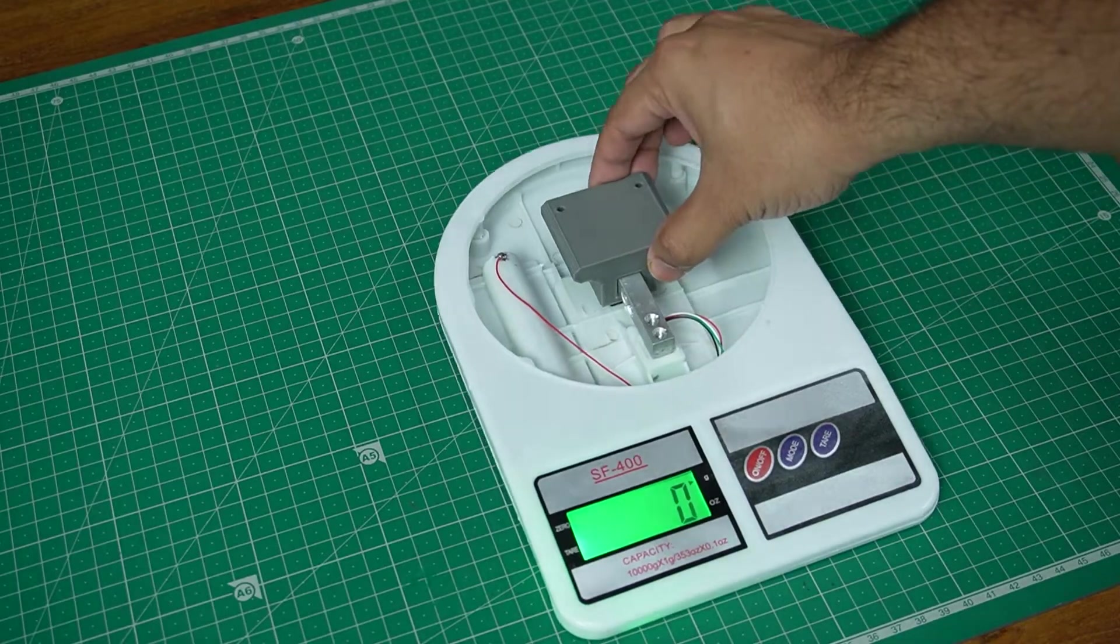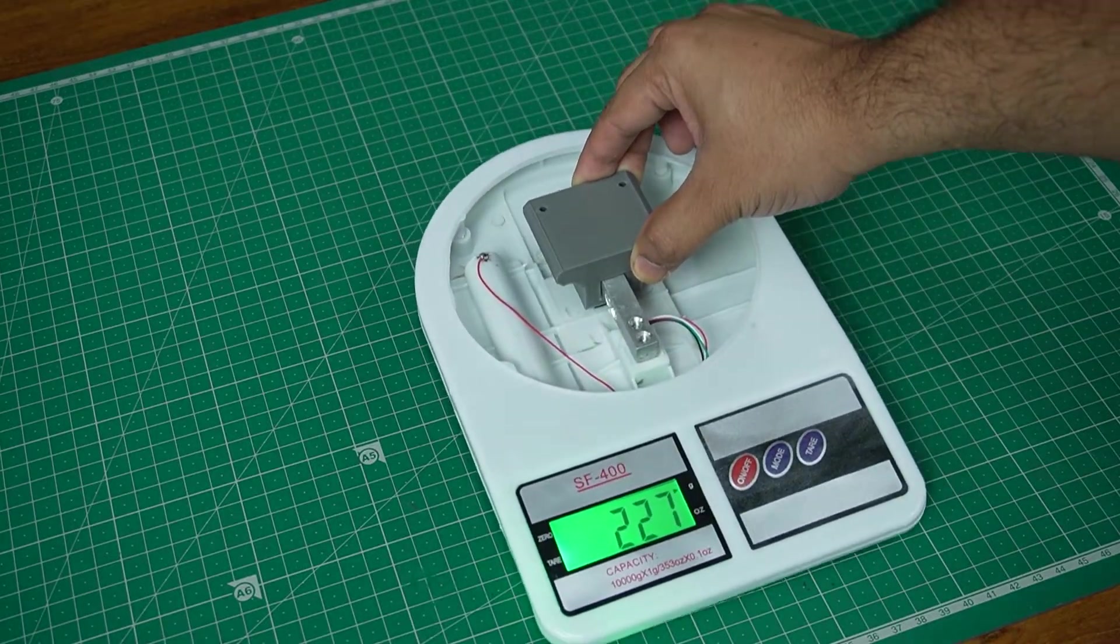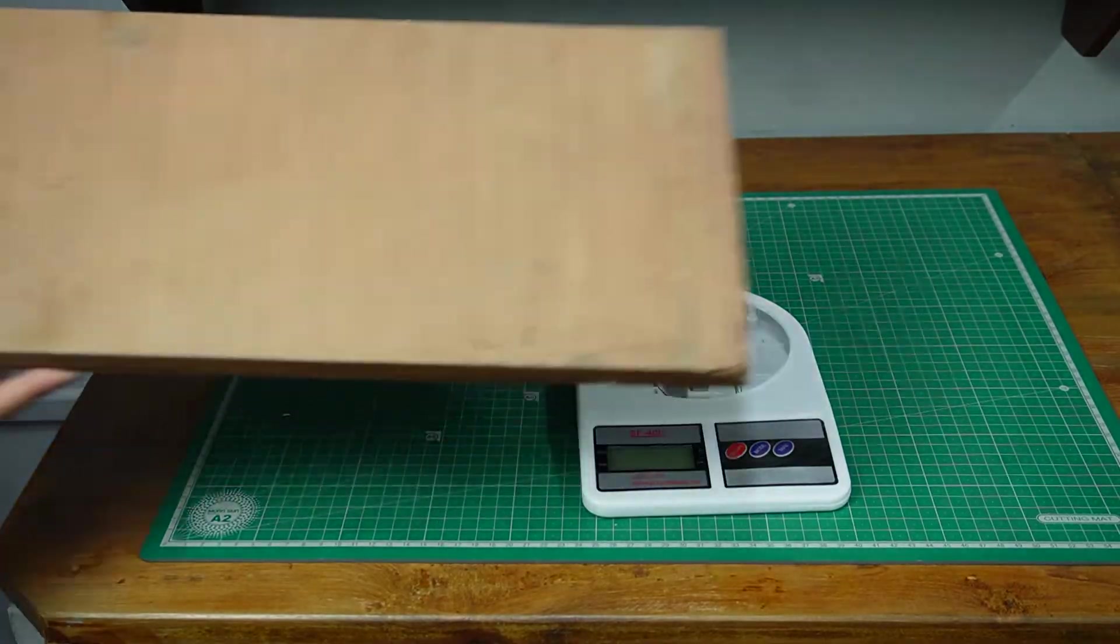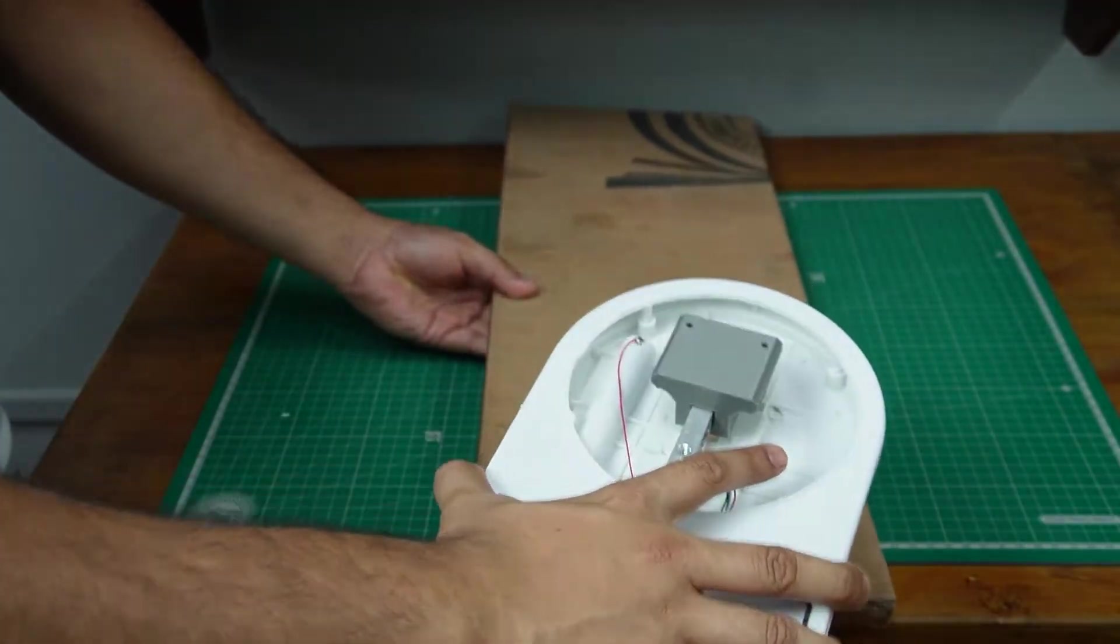The weight of the scale itself is about 250 grams and can easily fly away with the motor. To prevent this I secured it onto a piece of plywood with a screw.